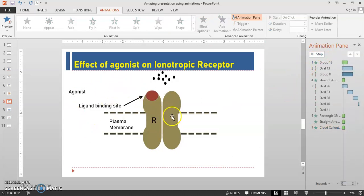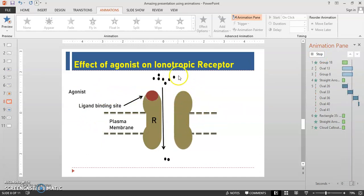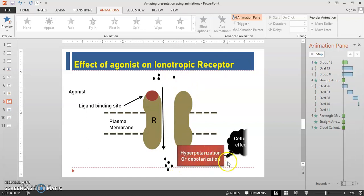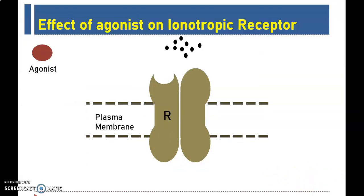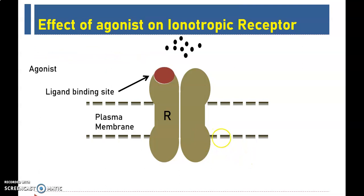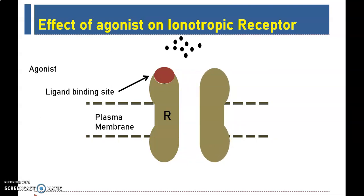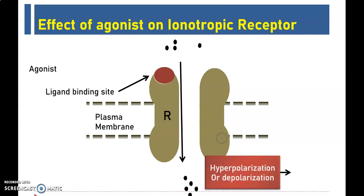You can convert the text format into the animated format and narrate it like this: the agonist will bind at the ligand binding site. After binding of the agonist, conformational changes happen in the receptor that opens the gate. As soon as the gate opens, the ions from extracellular high concentration move to the low concentration site. In this way the ions move intracellularly, which results into hyperpolarization or depolarization of the cells, and results into cellular effects.